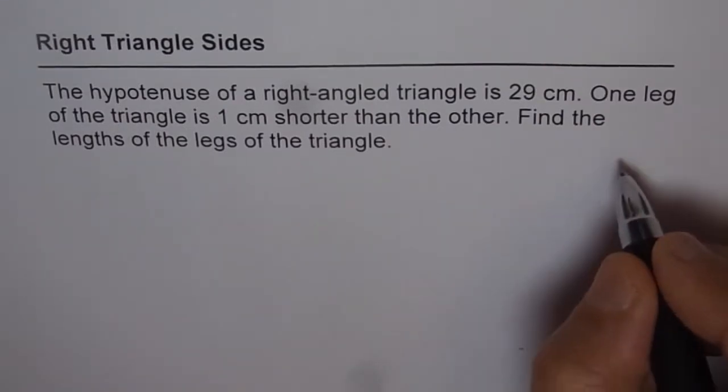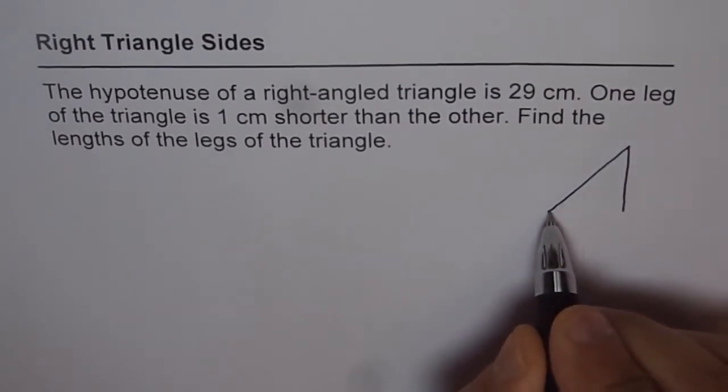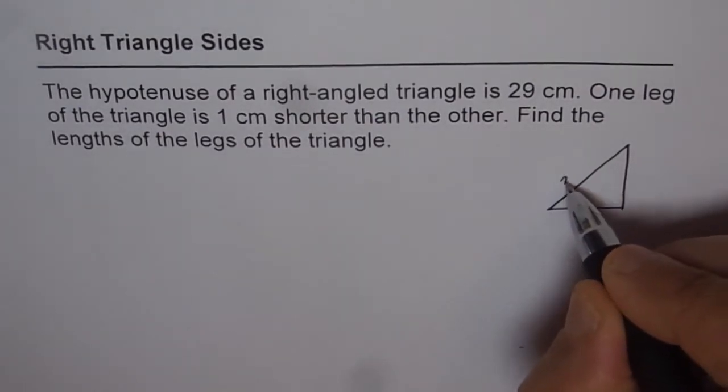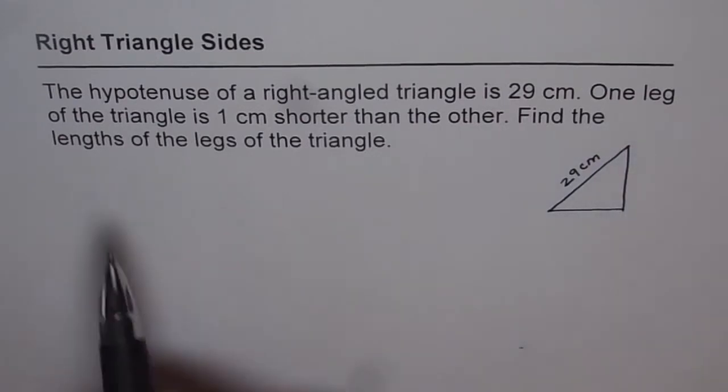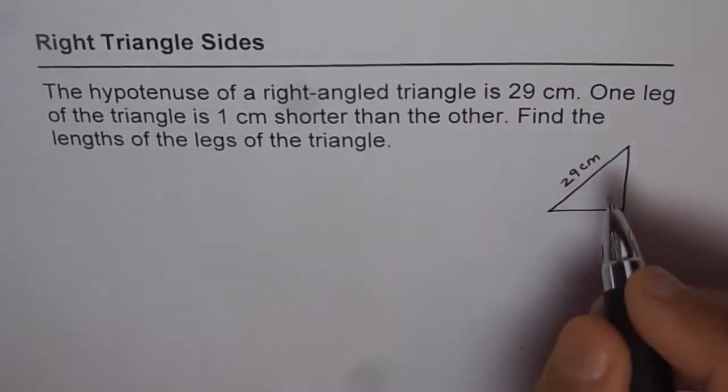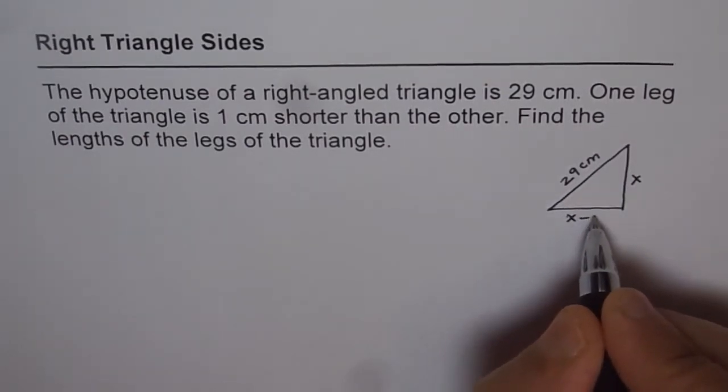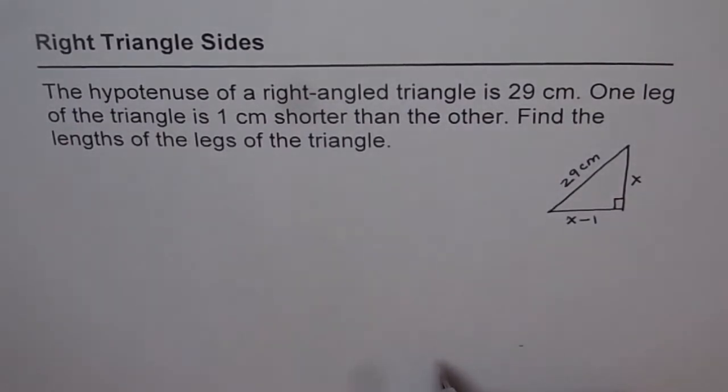Let's first sketch a right triangle. Let's say this is the right triangle with hypotenuse of 29 cm. Now it says one leg of the triangle is 1 cm shorter than the other. So let this be x, the other one will be x minus 1. The right triangle is the one where we have 90 degrees angle at one vertex.